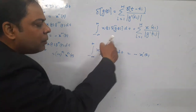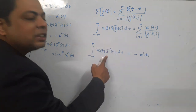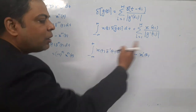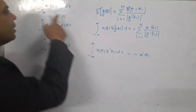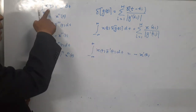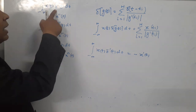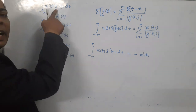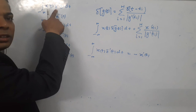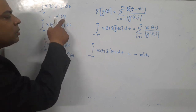But if the derivative order is increasing — suppose second derivative, third derivative — then what will be the results? See here: the integral from minus infinity to infinity of x(t) · δ''(t) dt. That means this is the second derivative of the impulse. The result will be x''(0) — you have to differentiate x(t) twice, take the double derivative of x(t), then put t equal to 0.